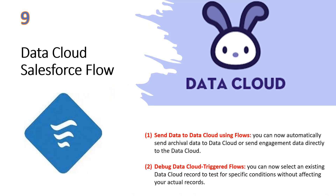There are two new Data Cloud Salesforce flow enhancements. You can now automatically send archival data or engagement data directly to the Data Cloud via flow. You can also select an existing Data Cloud record to test for specific conditions without affecting your actual records.